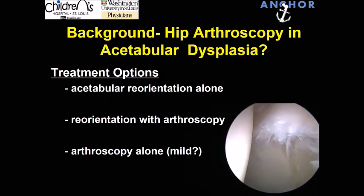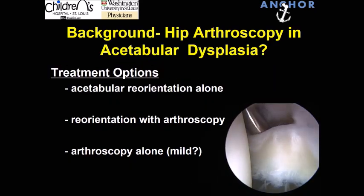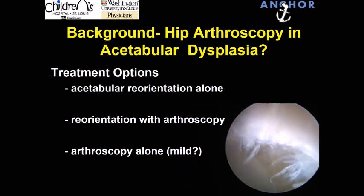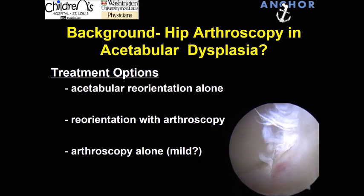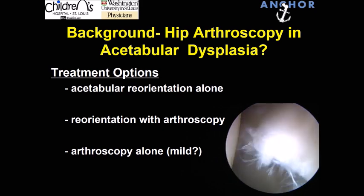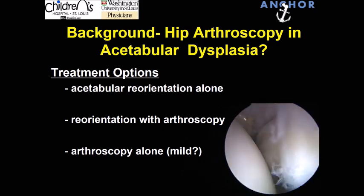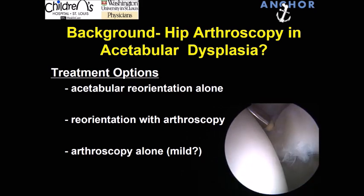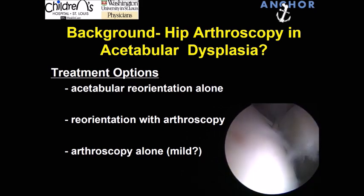The treatment options could be viewed as the following. Acetabular reorientation alone is a well-accepted treatment for acetabular dysplasia. Reorientation with arthroscopy could have some benefits in a case where we have a very unstable, large labral detachment. And then arthroscopy alone really is the most controversial option — whether there is a role for that, and if so, in what type of patient.